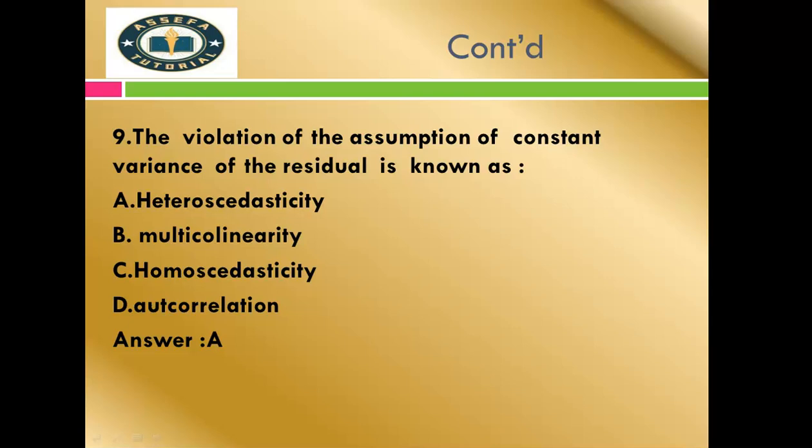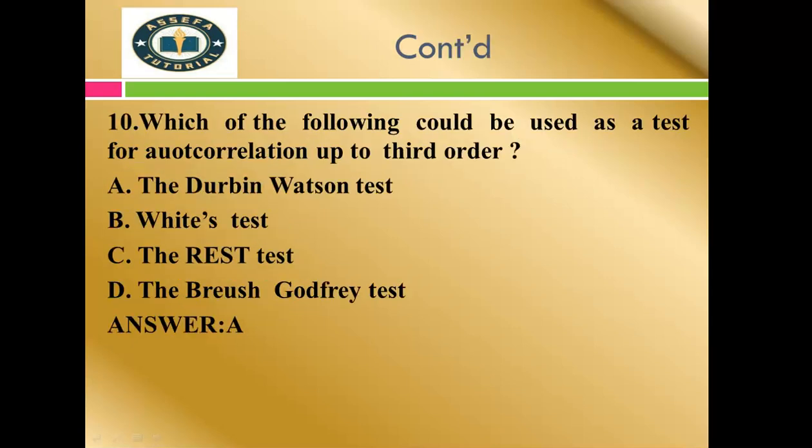The correct answer for this question is heteroscedasticity, because the variance of the error term or residual must be constant. Homoscedasticity means constant variance, so the violation of the assumption of constant variance of residual is known as heteroscedasticity. Autocorrelation is a relationship between successive error terms in time series data. Multicollinearity is a relationship among explanatory variables.